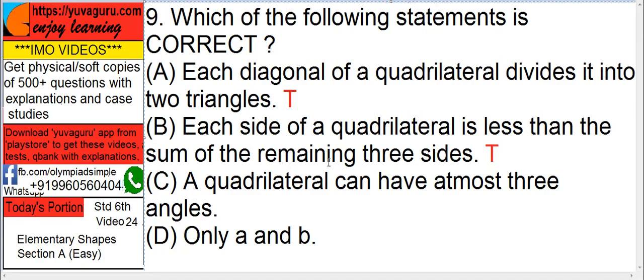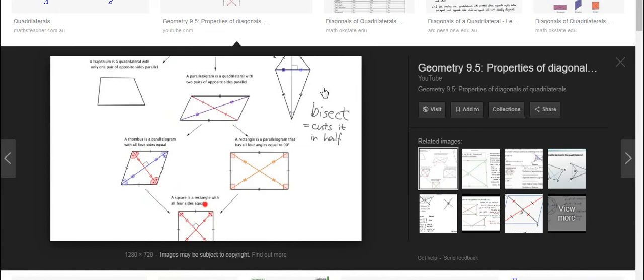A quadrilateral can have at most three angles. Check out any quadrilateral over here. Forget the diagonals now, look only at the quadrilateral part.